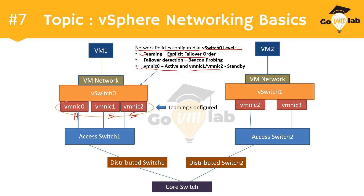The third important thing the VMware administrator configured as part of network policies is failover detection. In this scenario, the failover detection mechanism is configured as beacon probing — a very important aspect you need to understand. Just configuring teaming or attaching more than one uplink to your virtual switch doesn't make your network highly redundant. You really need to understand the underlying teaming policies, failure detection mechanism, and the failover order defined for your uplinks — all of these play a very important role in making your network highly reliable and redundant.